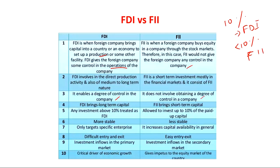Since FDI involves control over the company and over efficiency of operations and production, it is mostly a long-term capital commitment for a particular company. Whereas FII is short-term capital. We recently noted that 2018 was the highest FII outflow year in the past decade, which indicates that FII is unstable. FDI, being long-term capital, is more stable, so the entry and exit for FDI is more difficult compared to FII.